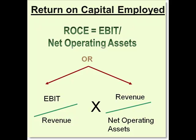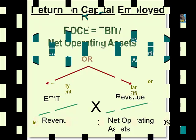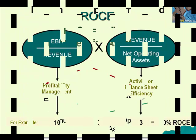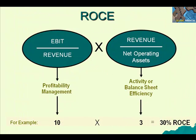Let's consider another way to look at our Return on Capital Employed formula. The same formula can be shown as EBIT divided by revenue, multiplied by revenue divided by those same net operating assets. Obviously revenue cancels out to get back to the original formula — but why is this important? Here's some food for thought.